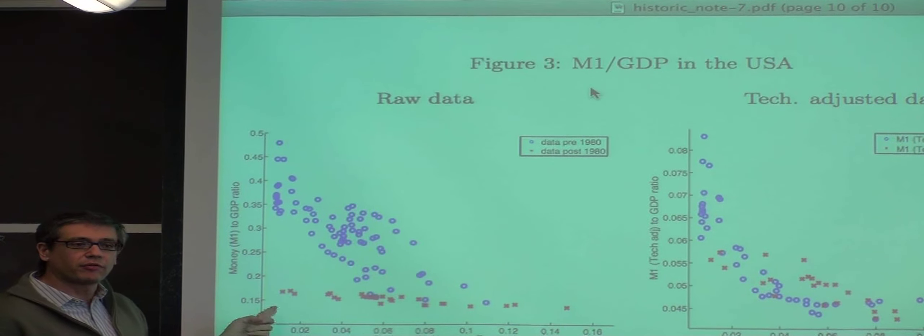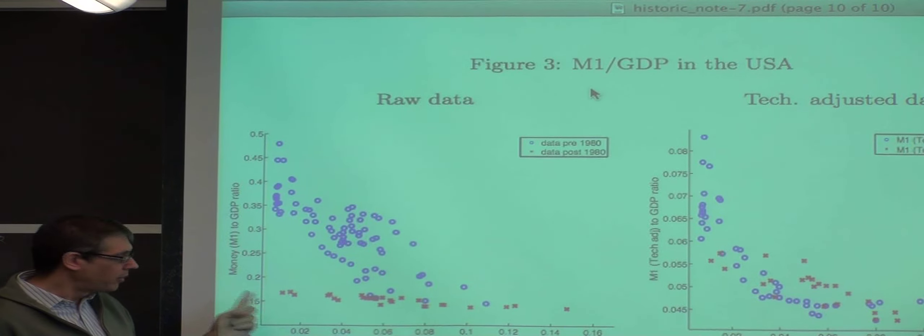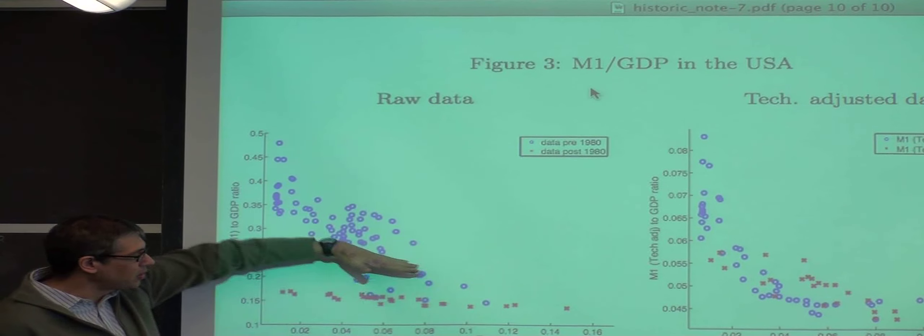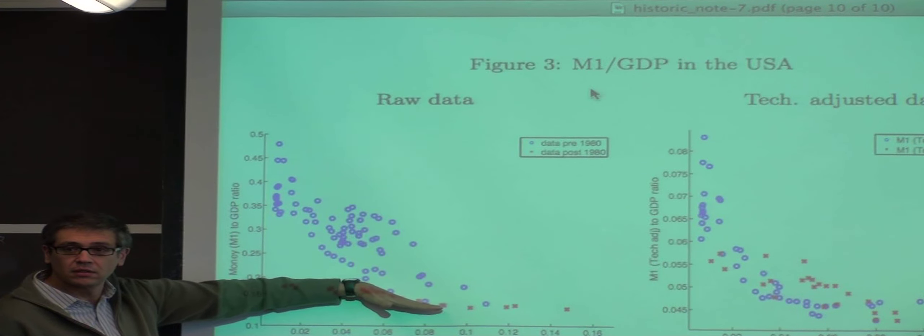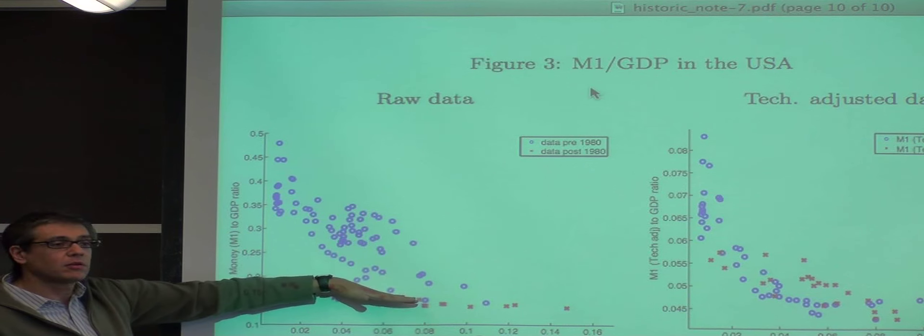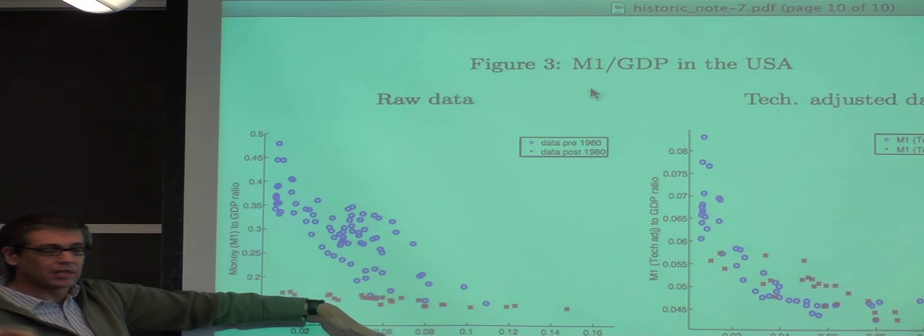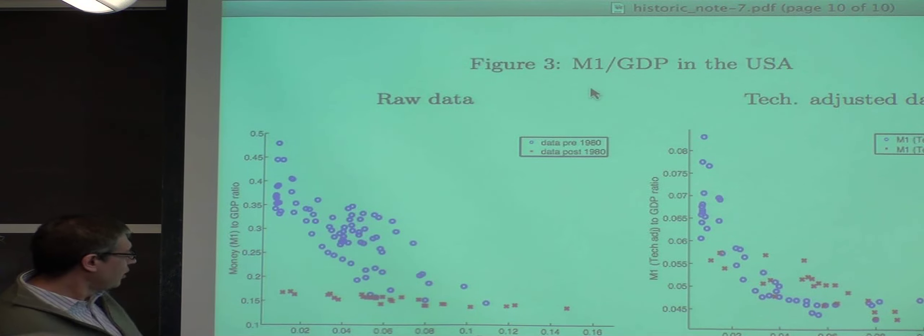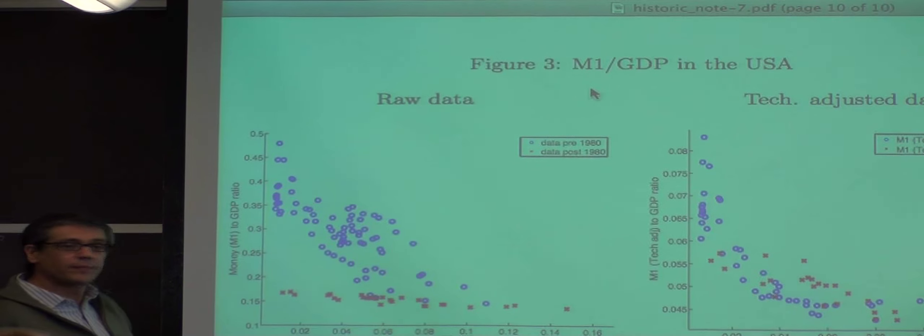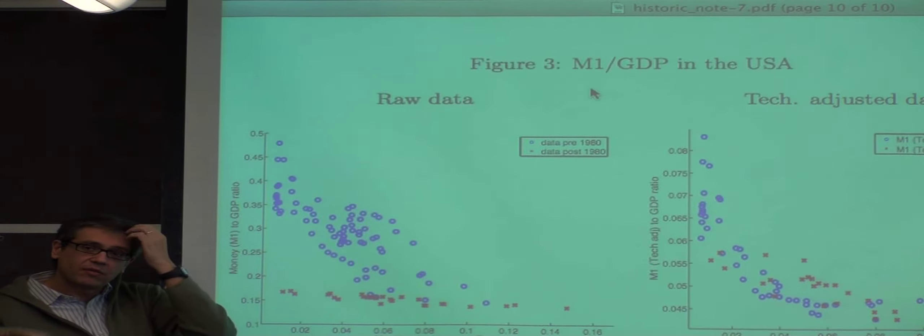And the typical explanation for this, the conventional wisdom for this, there's no explanation for why it's flatter. But the conventional wisdom of why it's lower, the money demand, in some sense why for the same interest rate is lower.